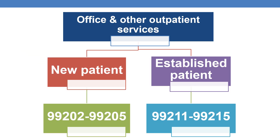Coming to various CPTs of office and other outpatient services, they are broadly categorized into two types: new patient and established patient. The CPT range for new patient is 99202 to 99205, whereas the established patient codes for office or other outpatient services are 99211 to 99215.